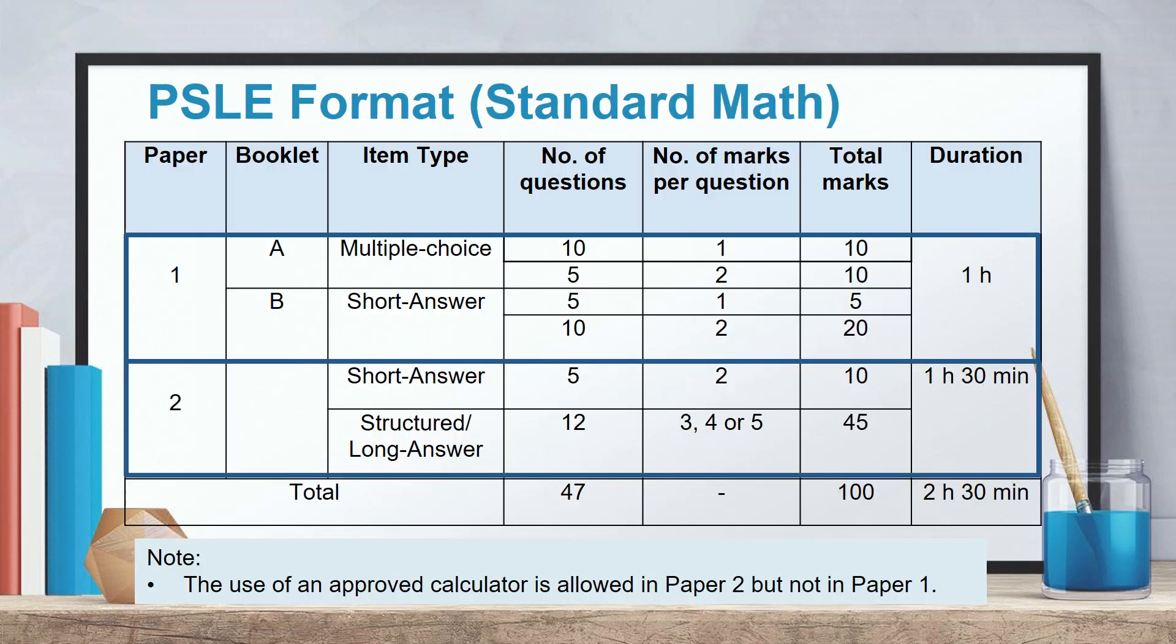This is the PSLE format, the format of the paper for standard mathematics. You will notice there are paper 1 and paper 2. Paper 1 consists of booklet A and booklet B. All together the duration is one hour. Now for this paper 1, students are not allowed to use calculator. So basically this paper 1 tests on speed and accuracy.